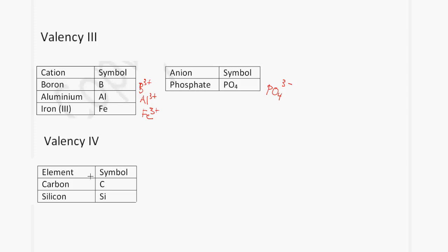Lastly, we have a valency of 4. We have carbon with symbol C, and silicon with symbol Si. I suggest that you learn the cations and anions that have a valency of 1, 2, and 3, and you also need to remember the symbols for these.